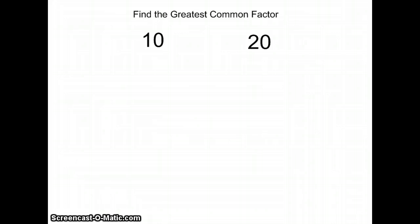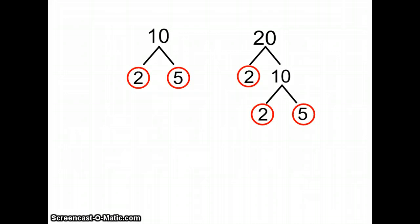So the first thing you would do for whatever numbers you're working with, in this case 10 and 20, you would do the factorization of both numbers. So this is what it would look like.